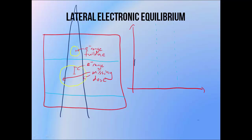If in a beam like this one we have lateral electronic equilibrium in water but not in lung, we'll see a dip in dose inside the lung region. This loss of electronic equilibrium is something that we tend to see in high energy beams moving through low density medium, because as the energy increases, the electron range increases, and therefore so does the size of the beam that we need to use in order to provide full dose. The same is true when material density decreases as well — as the density decreases further, the electron range increases, and therefore so does the size of the beam required to provide equilibrium.